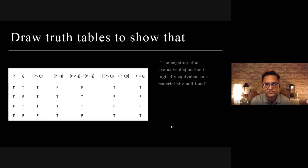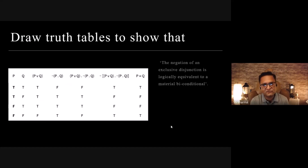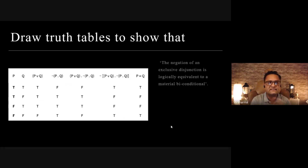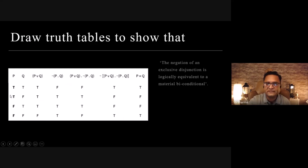The truth table question: show that the negation of an exclusive disjunction is logically equivalent to a material biconditional. First, let's understand exclusive disjunction: it is true only when exactly one of its components is true. If both are true it is false, and if neither is true it is also false. An example would be: 'someone likes tea or coffee, but not both.'